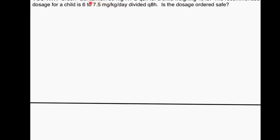We need to take this range and customize it for our patient. It's recommended for any patient because it says per kilogram, so we need to figure out how many kilograms our patient weighs. The patient weighs 40 pounds — we divide by 2.2 to get kilograms. Rounding to the tenths place, that's approximately 18.2 kilograms.